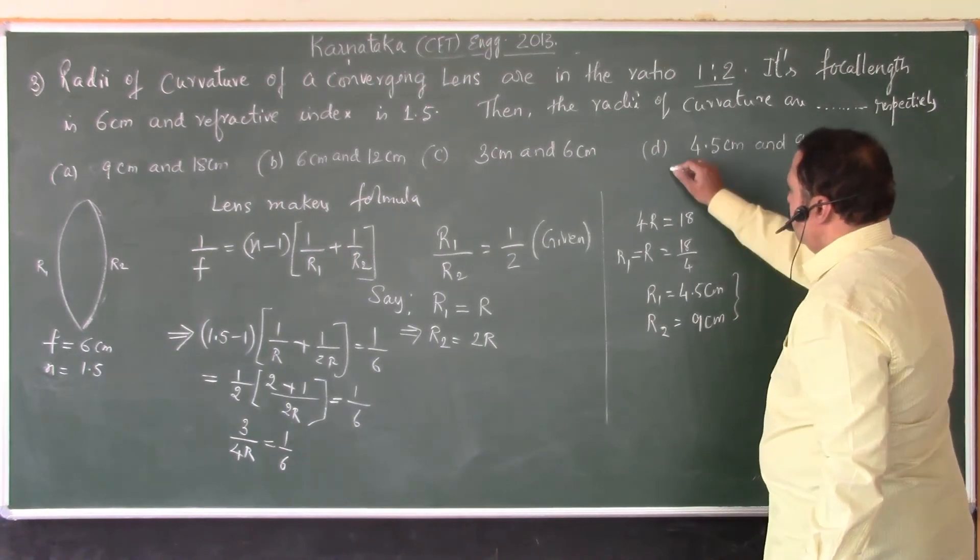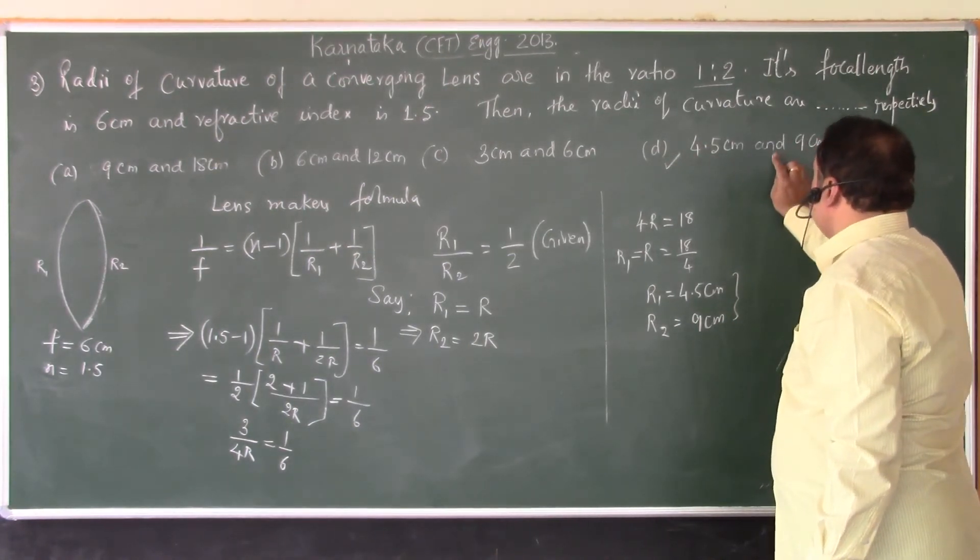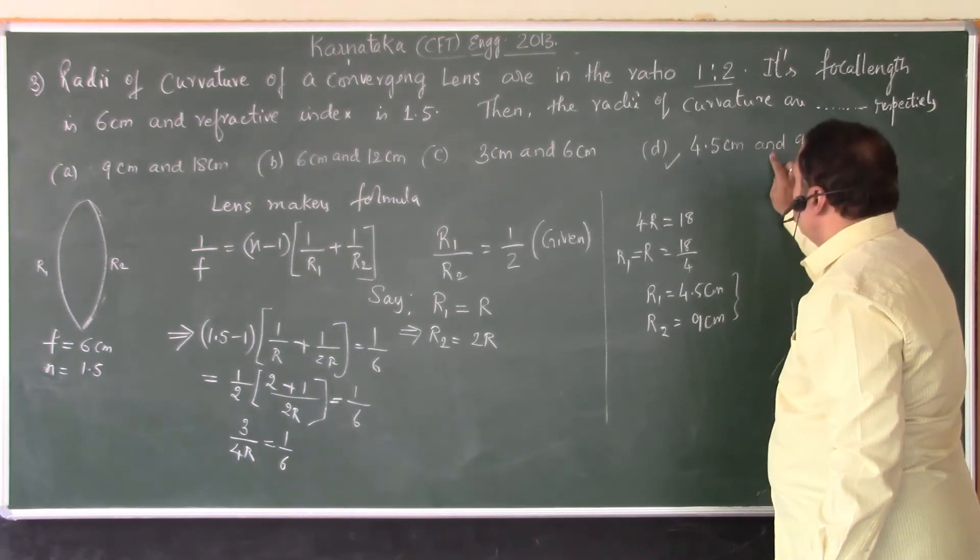So, in the option, D matches, that R1 is 4.5 and R2 is 9 centimeter. So, the right answer is D.